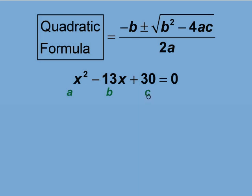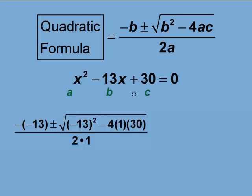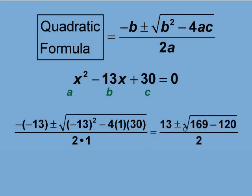Plug these values into the quadratic formula to find the roots of the equation. The b value of negative 13 goes here and here. The a value of 1 goes here and here. The c value of 30 goes here. Simplify the expression and we get two roots: x equals 10 or x equals 3.